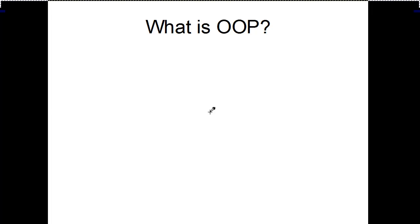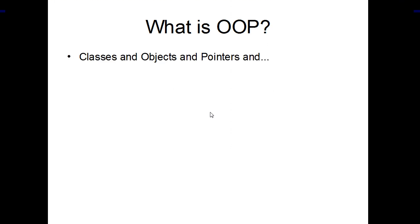What is object-oriented programming? Well, basically, it's classes and objects and pointers and a lot of other words that really mean that you're just going to code in a slightly different way. You're going to organize your code in a way that is going to make it more efficient. That's the purpose of object-oriented programming, nothing more than that.